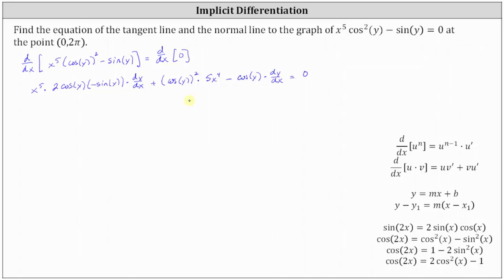Now we need to solve this equation for dy/dx. Because the dy/dx terms are both negative, let's move those to the right side of the equation, and we'll leave the square of cosine y times five x to the fourth on the left, written as five x to the fourth cosine squared y. Notice this product is negative, so adding it to both sides gives us positive two x to the fifth cosine y sine y times dy/dx. Then adding cosine y times dy/dx to both sides gives us plus cosine y times dy/dx on the right.